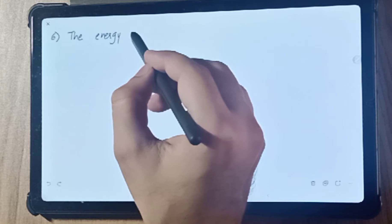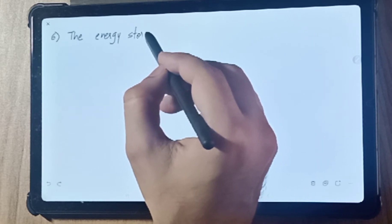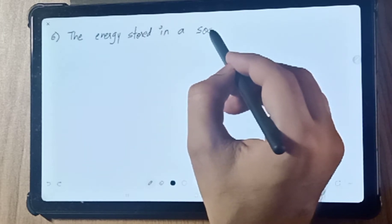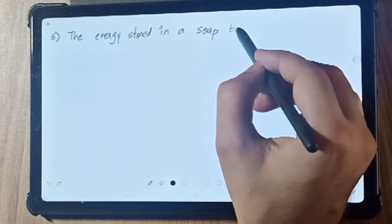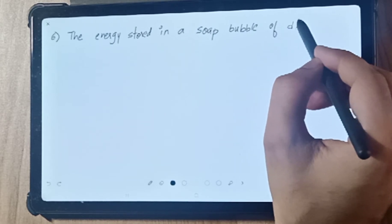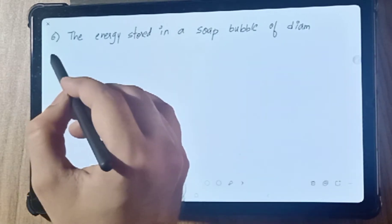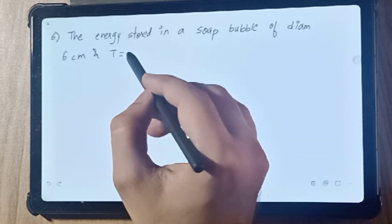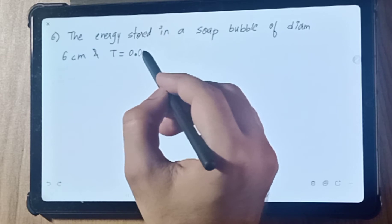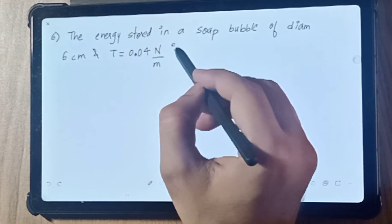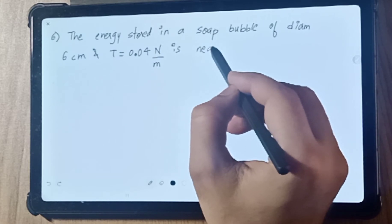The energy stored in a soap bubble of diameter 6 cm and T is equal to 0.04 N/m is nearly how much?